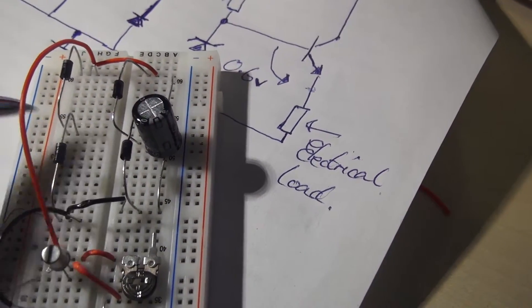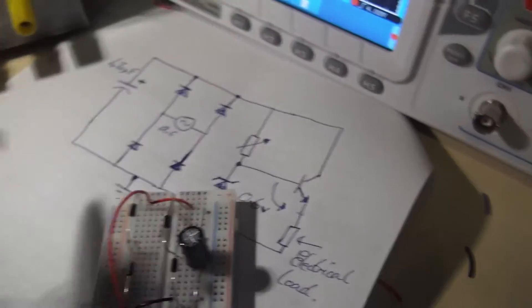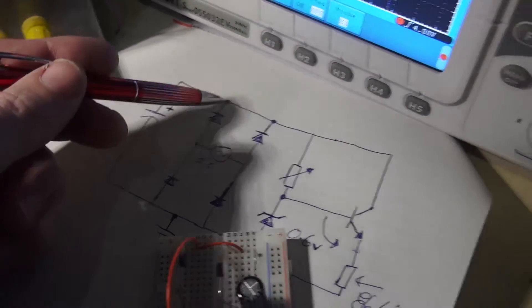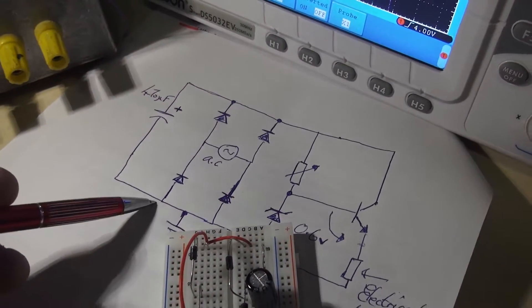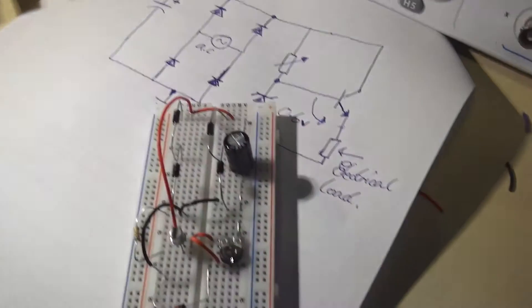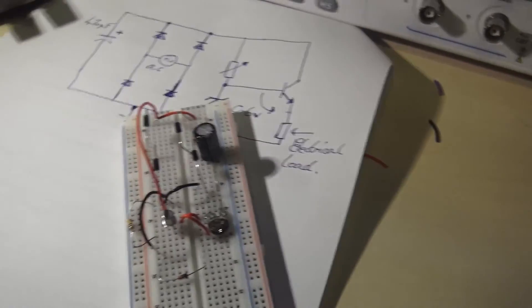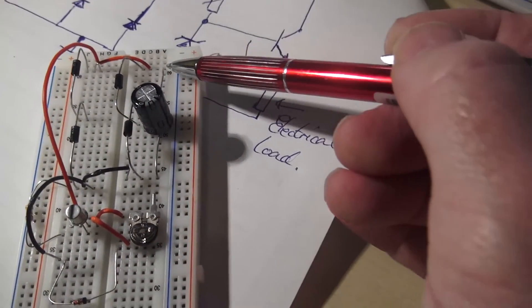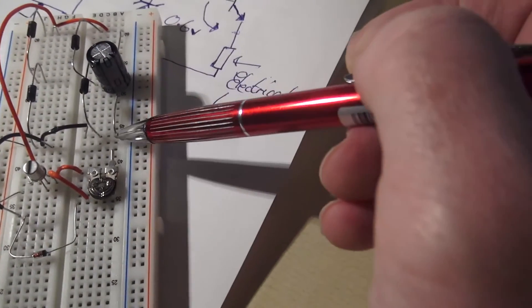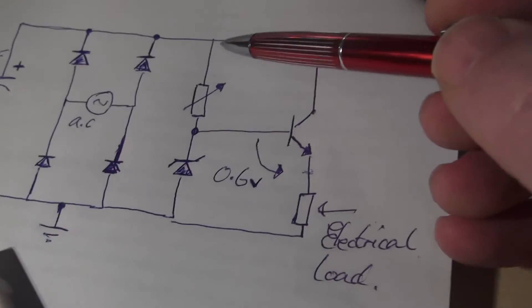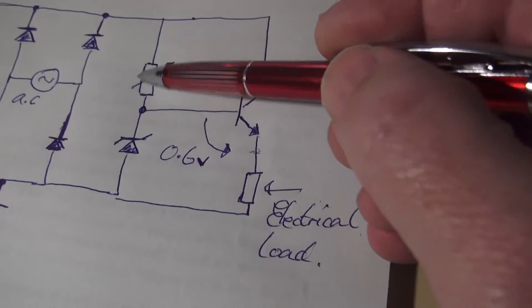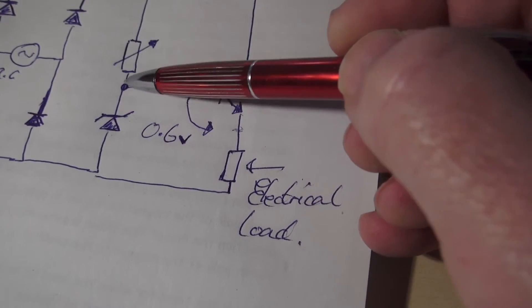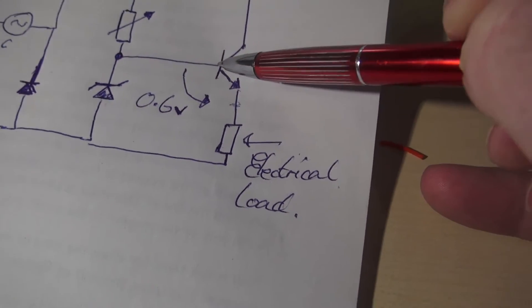The smoothing capacitor is in parallel with the full wave bridge rectifier. And here is our smoothing capacitor there. And here I've used the variable resistor on the schematic, and that connects to the base of the transistor.